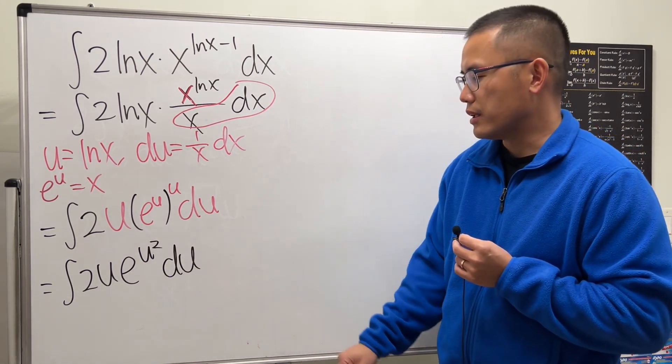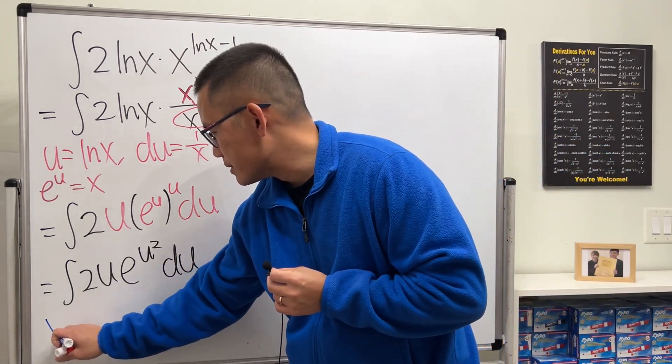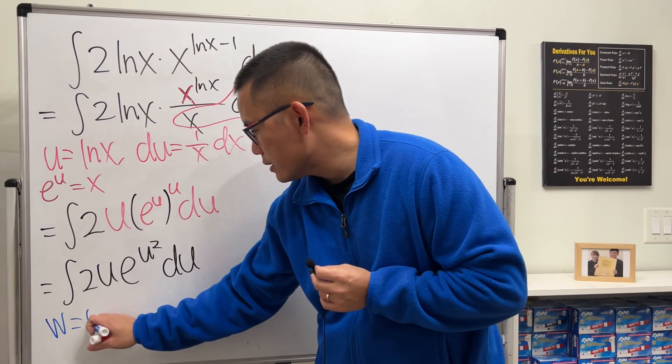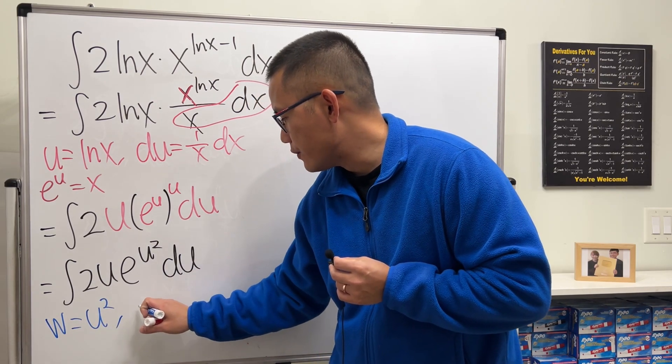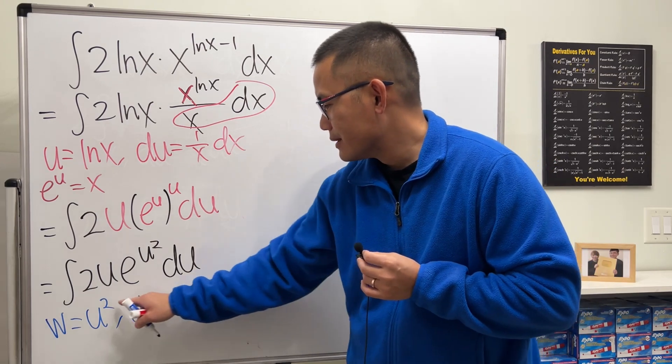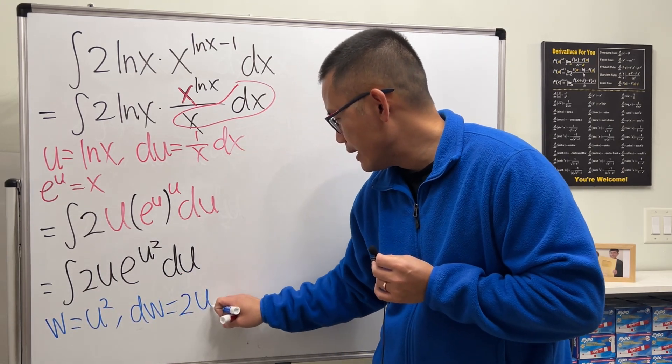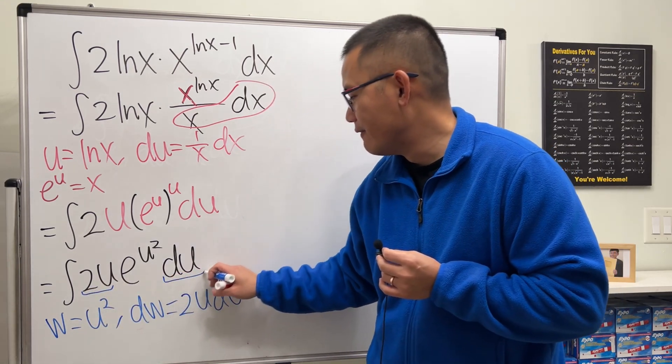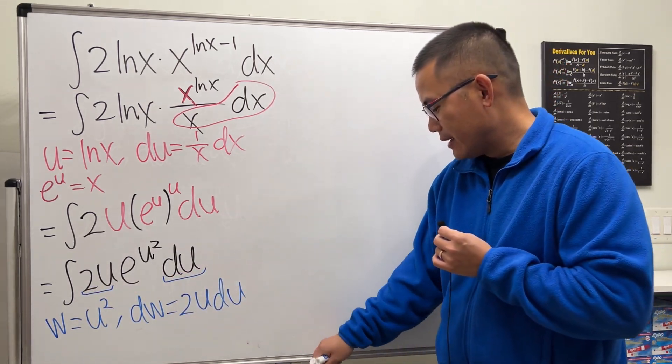Now we can just do another substitution. Perhaps let's do a w substitution. I'm going to put w to be u squared, and you will see, differentiating both sides, we get dw equals 2u du, and we happen to have this very nice d right.